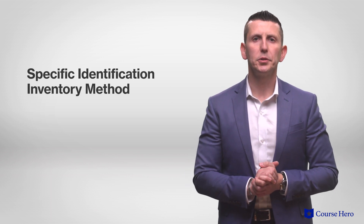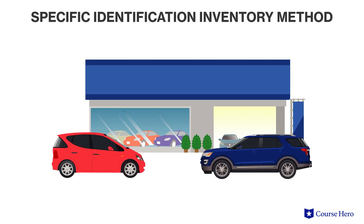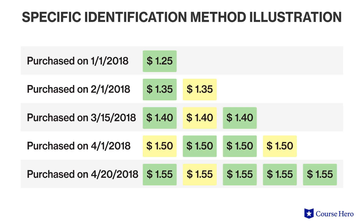Under the specific identification inventory method, the cost of the units sold is explicitly stated with each purchase. This method of inventory valuation is usually reserved for high-priced and highly customized items. An example is an automobile dealer — having merchandise at such a high cost, automobile dealers rely on serial numbers and specific identifiers for their products and cost each item at its specific cost. Though some items may be identically made, many automobile dealers tailor their cars to the needs and desires of each customer, making the inventory highly specialized. Specific identification is the only inventory valuation method where the physical flow of inventory matches the accounting flow; accountants keep track of the specific items sold and the cost of that specific item.